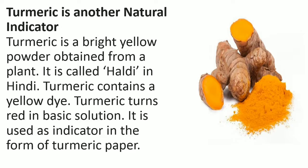Now in the first session I told you that baking soda is basic in nature. So you can try it yourself — make a solution of baking soda and put it on the turmeric paper. What you will see is that the colour of the turmeric paper will turn red.